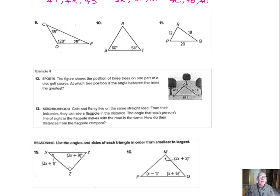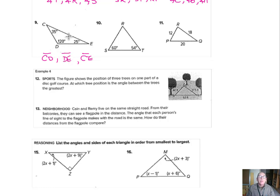Looking at number 9, the smallest angle is 25, so CD is the smallest side. The largest angle is 120, which is D, so CE is going to be the largest side. In between, we have side DE, which is opposite the 35. So ordering by angles 25, 35, 120, we get sides CD, DE, CE.